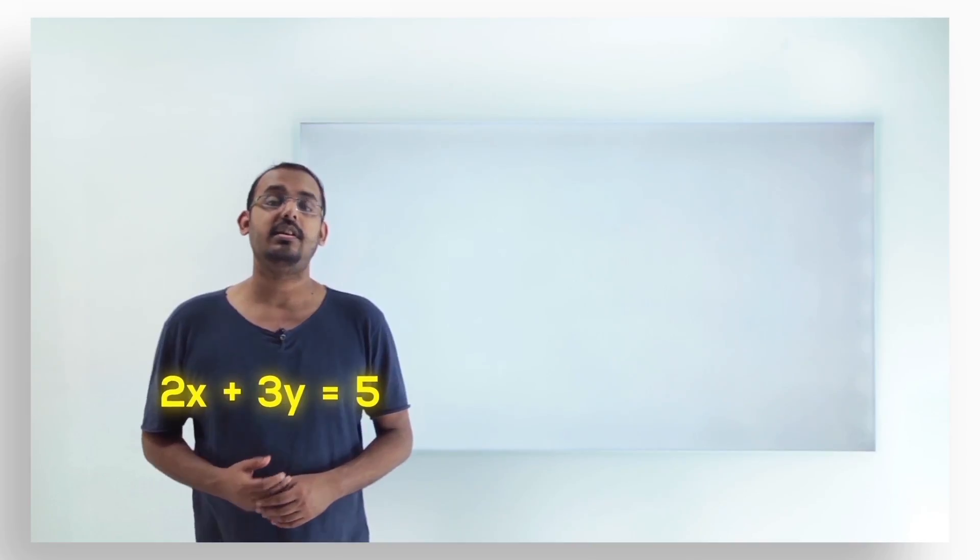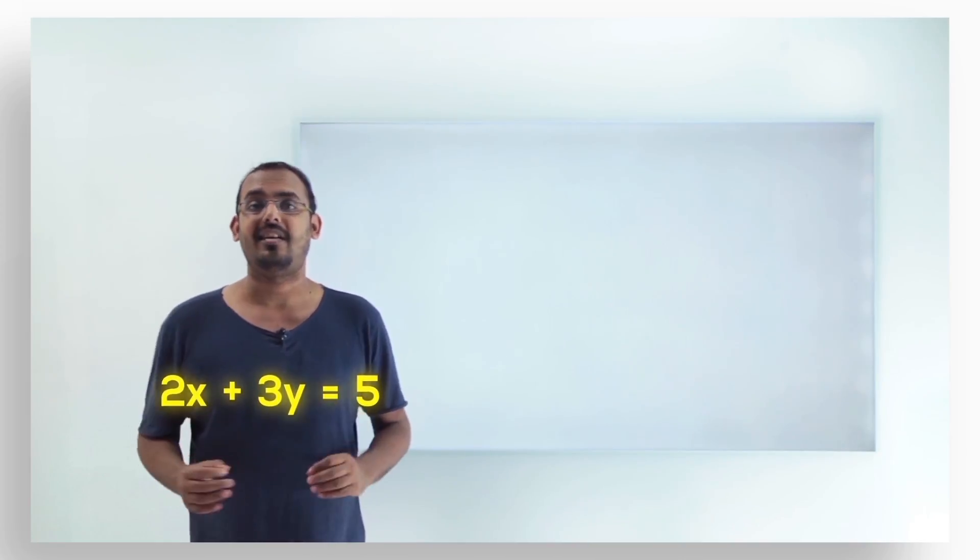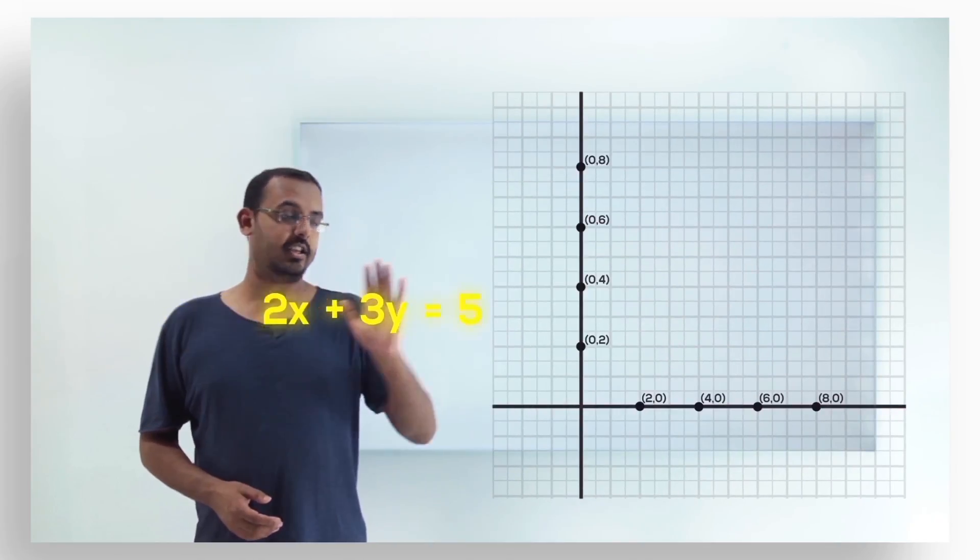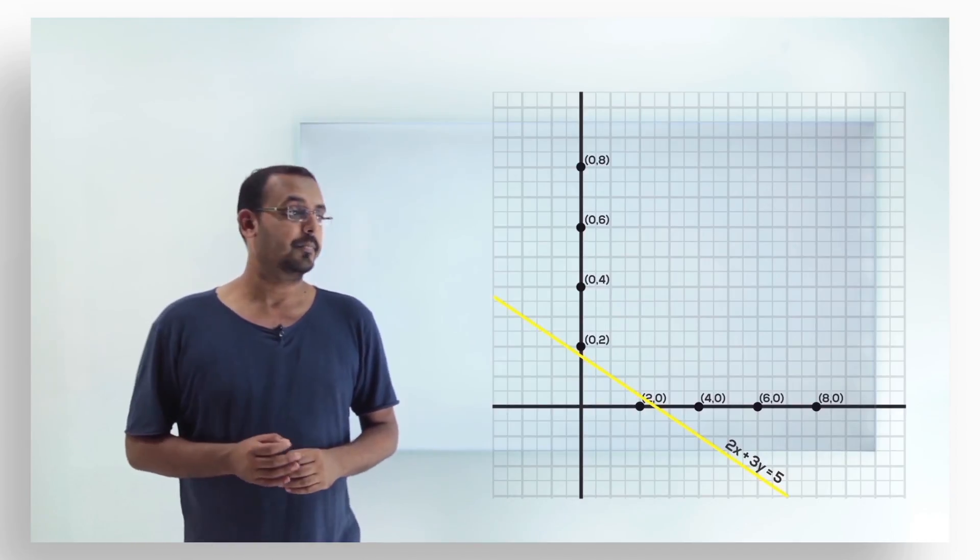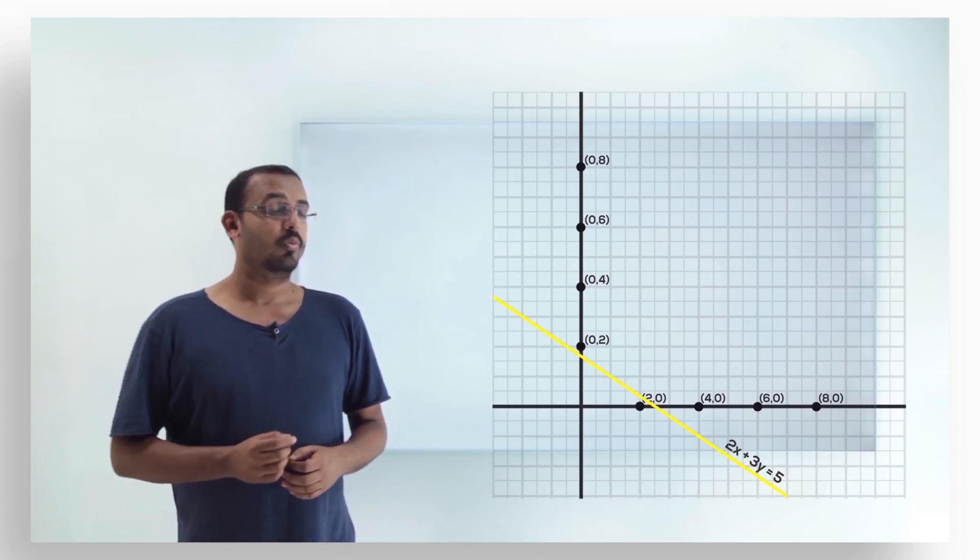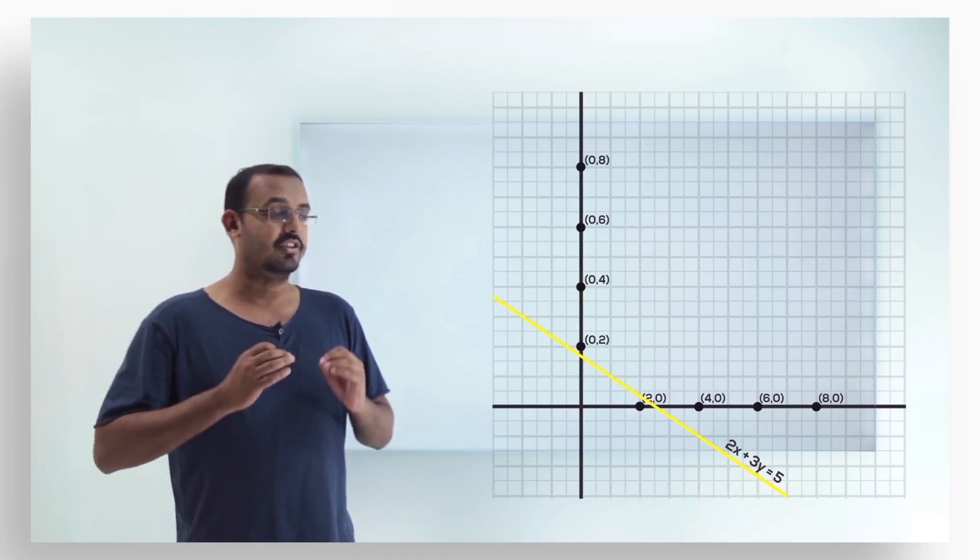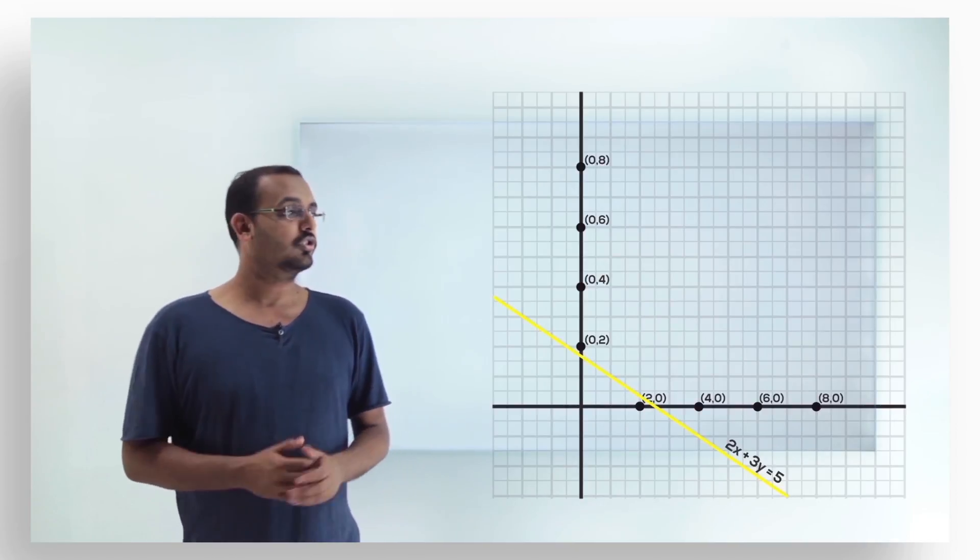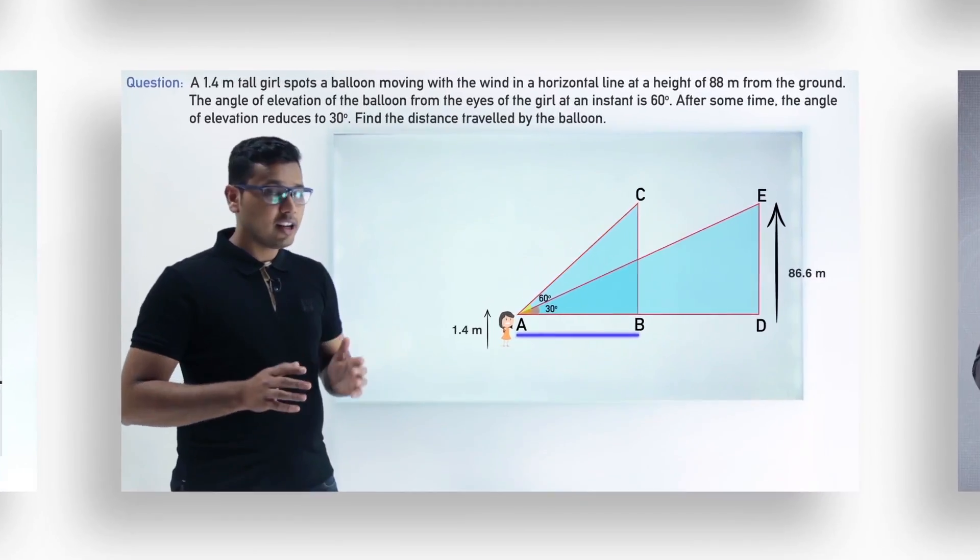Now what we need to understand is how we represent a linear equation which is in two variables on a graph or in geometrical form. So let's bring out a graph here and put this linear equation onto the graph. In this graph we can clearly see that the linear equation in two variables x and y gets transferred onto a straight line when we bring it into the geometrical form. This is how we represent a linear equation in two variables.